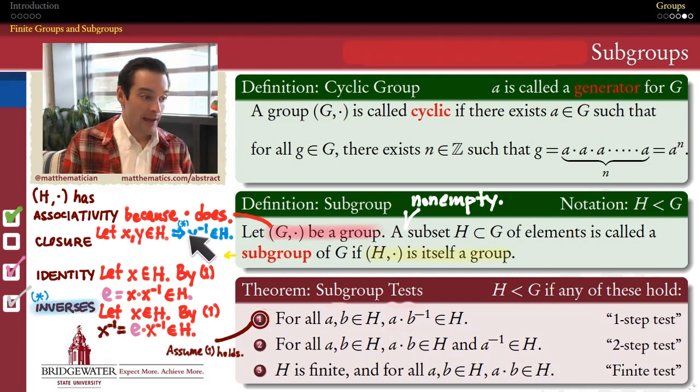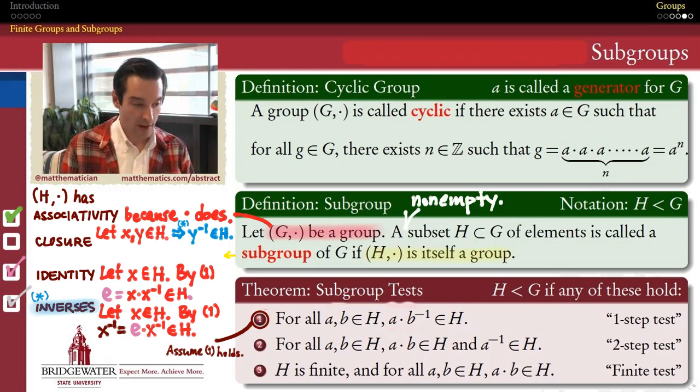Because we've just shown that the inverses of all elements of H are in H. So if X and Y belong to H, that means that Y inverse also belongs to H because of what we just proved. And now I can invoke this property with the role of a being played by X and the role of b being played not by Y, but by the inverse of Y.